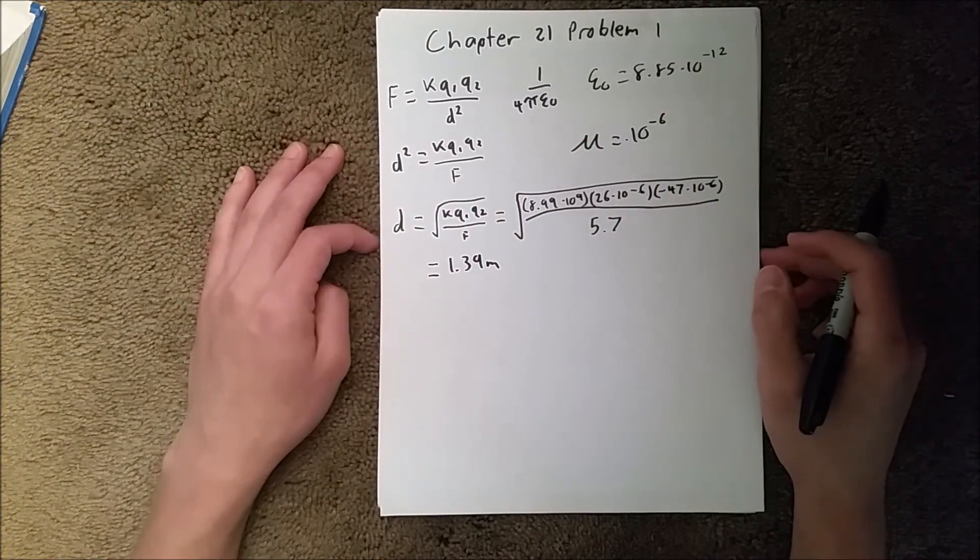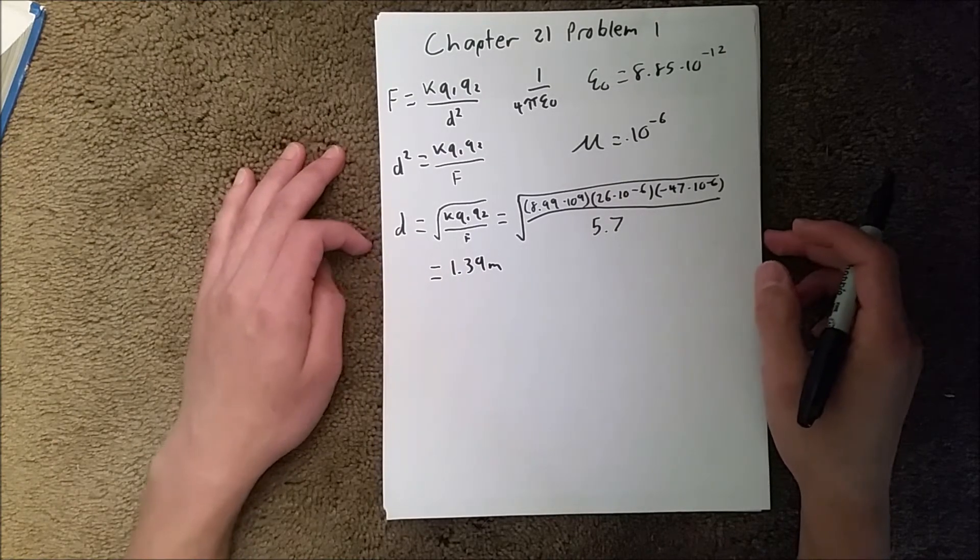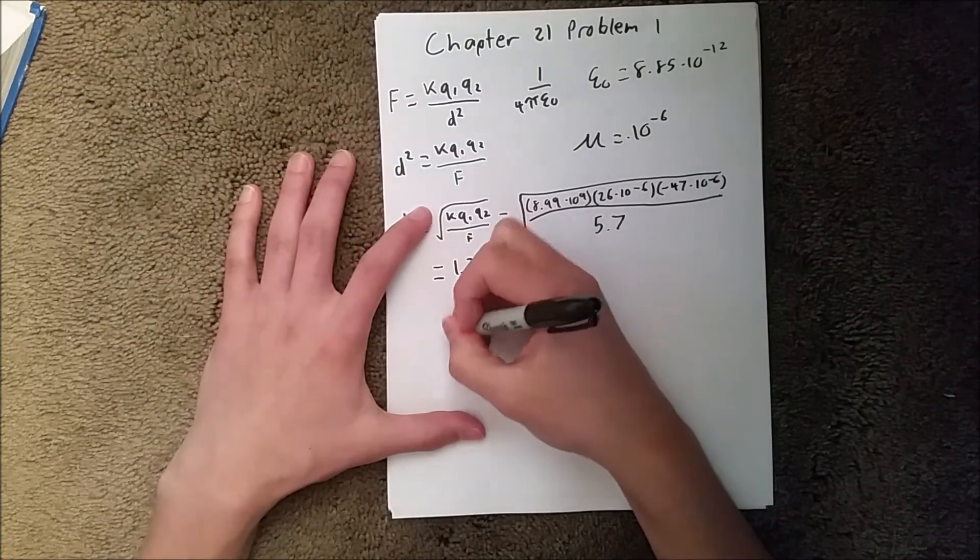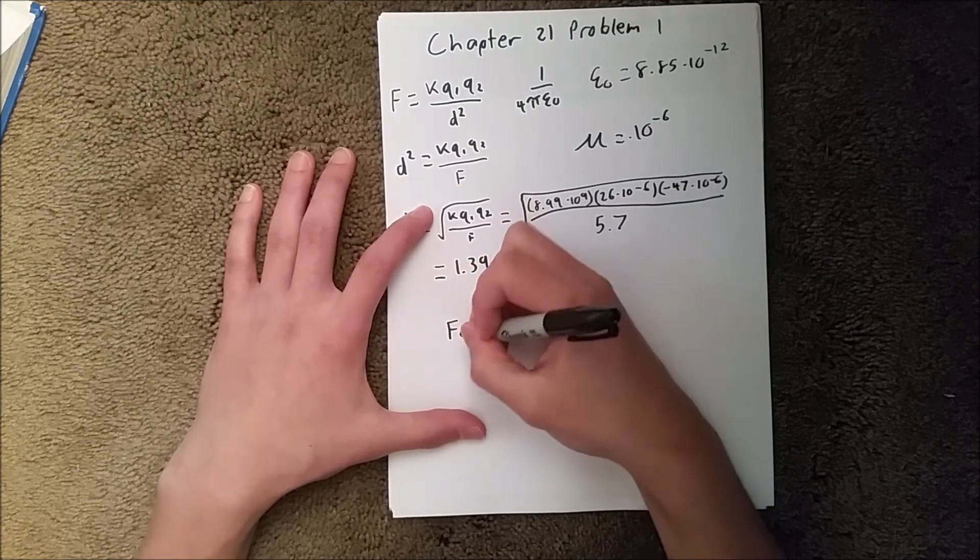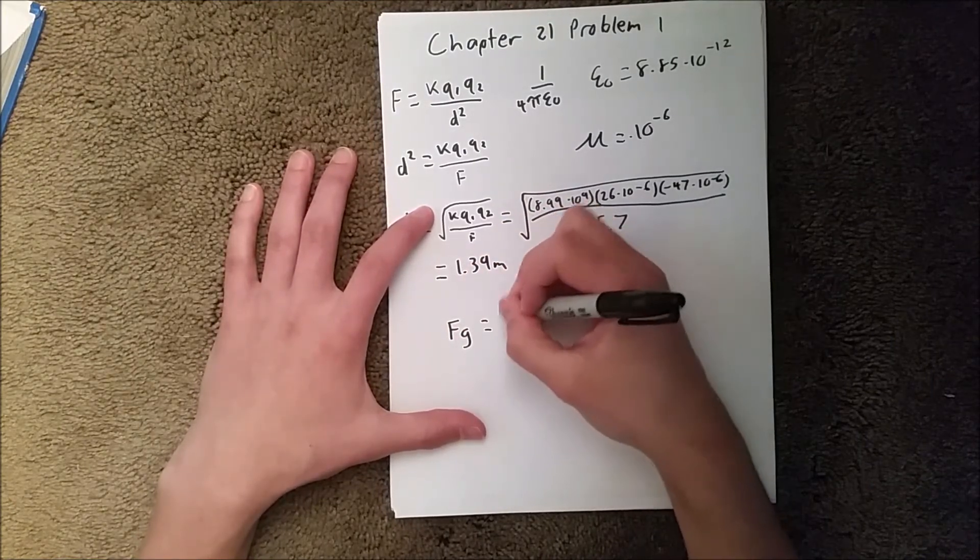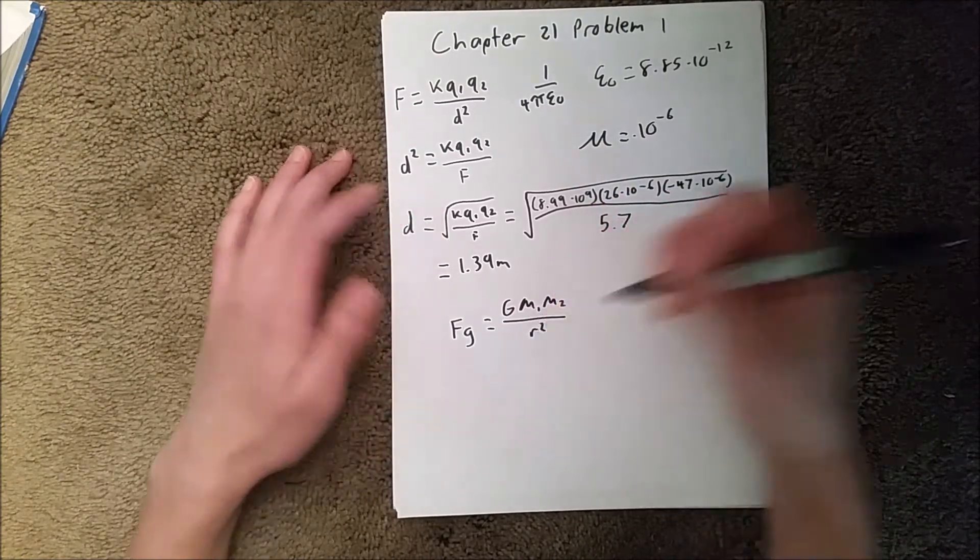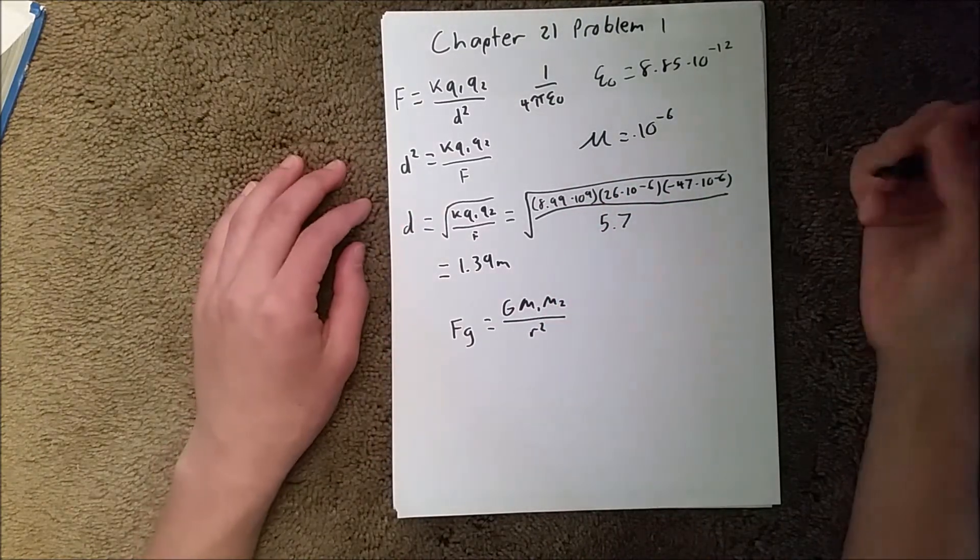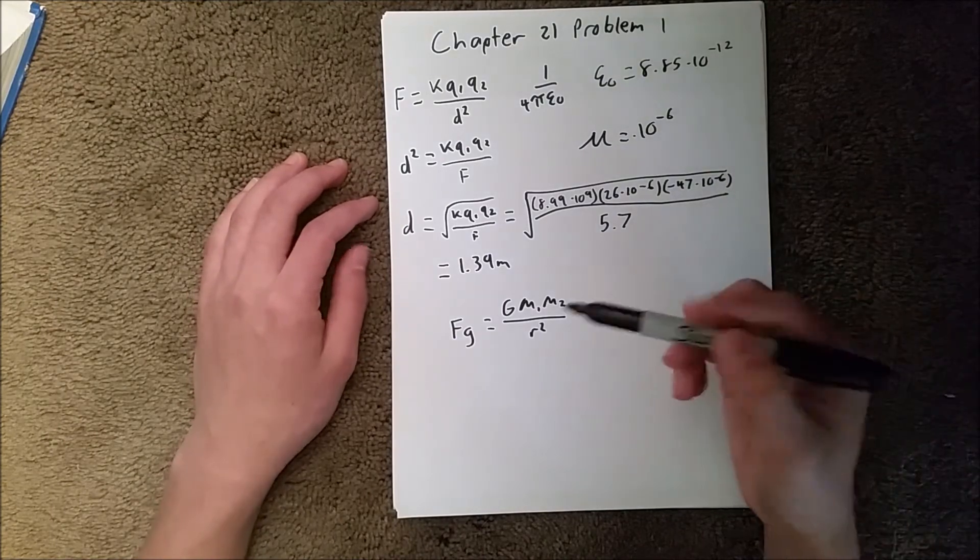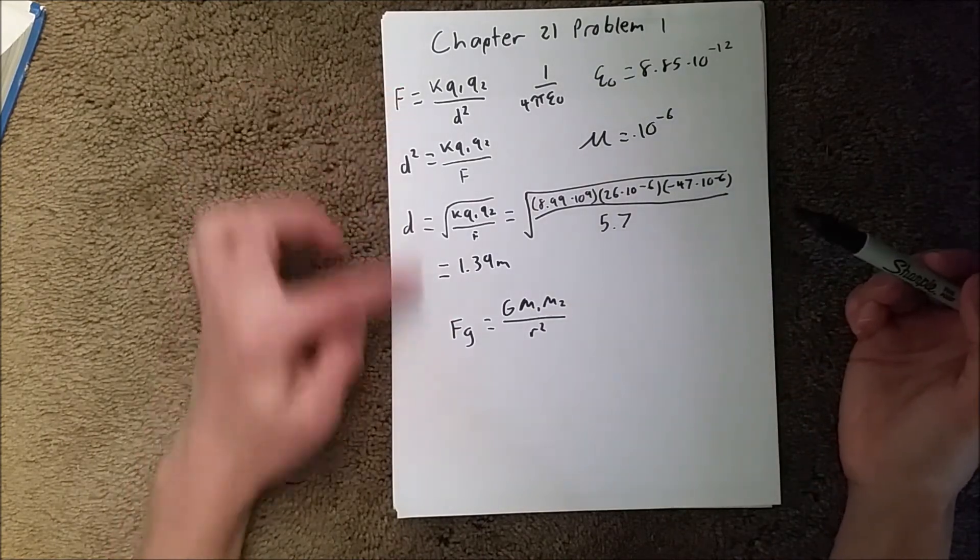The reason why this is similar to gravitation is because our fundamental equation for that is the force of gravity is equal to G Mass 1 Mass 2 over R squared, radius being the radius between one object and another object.